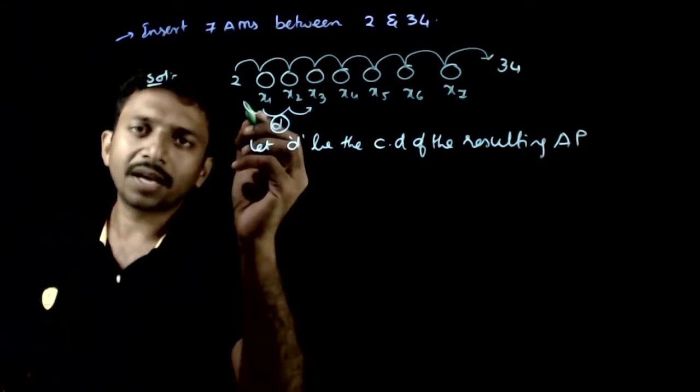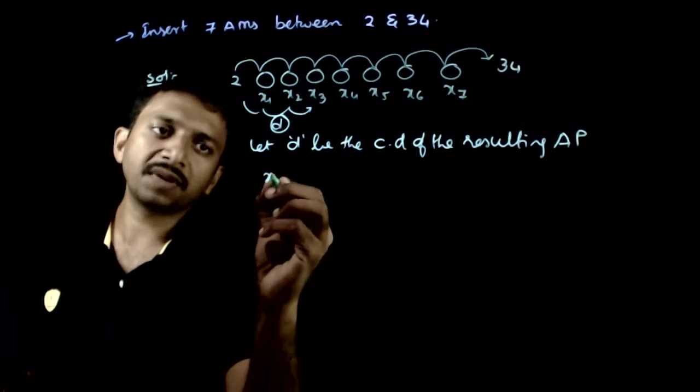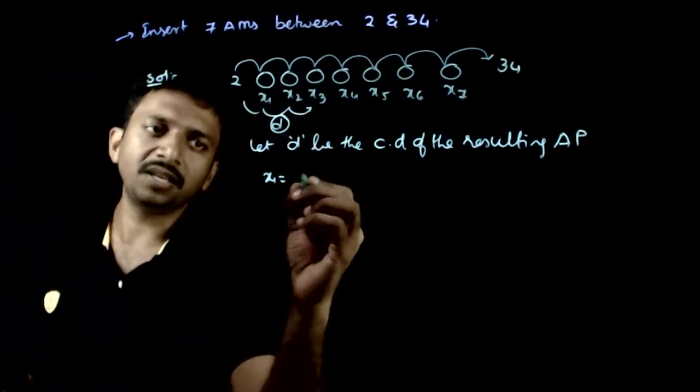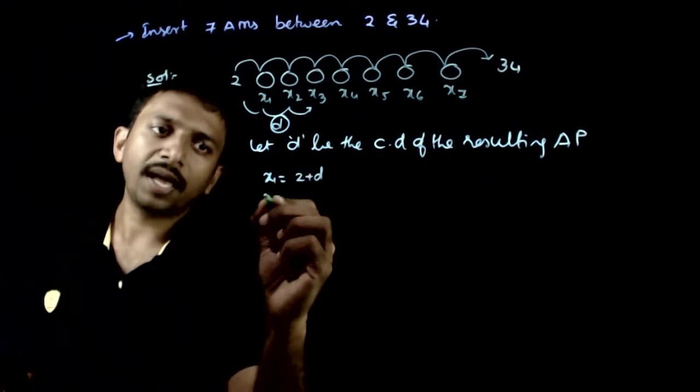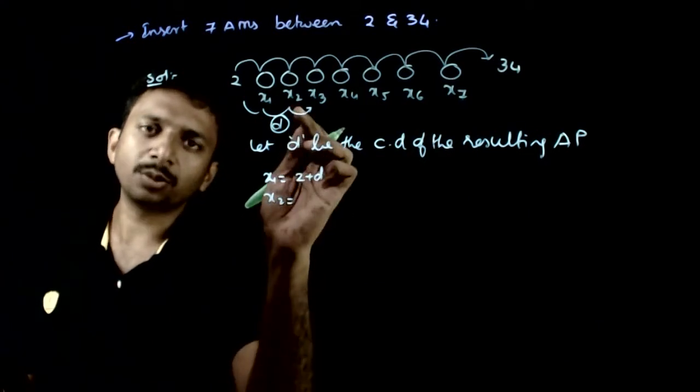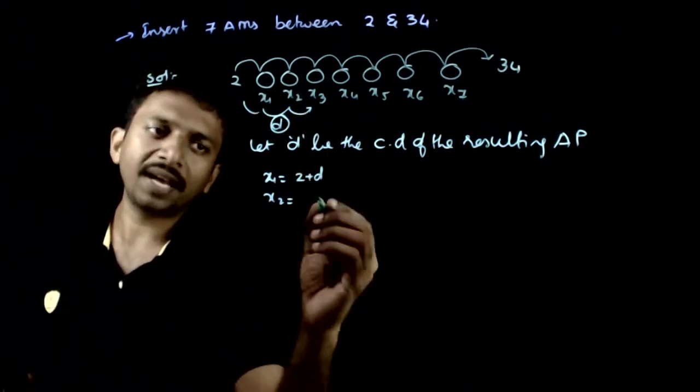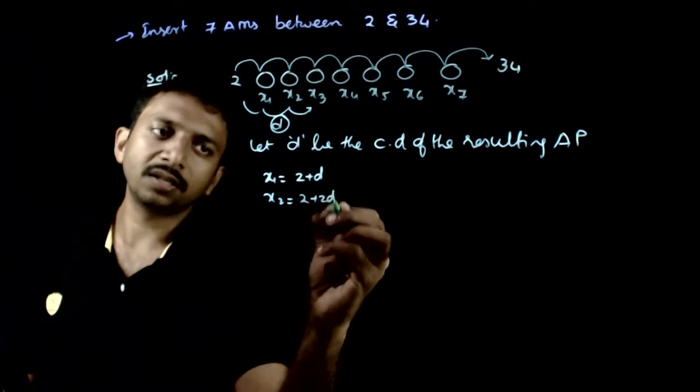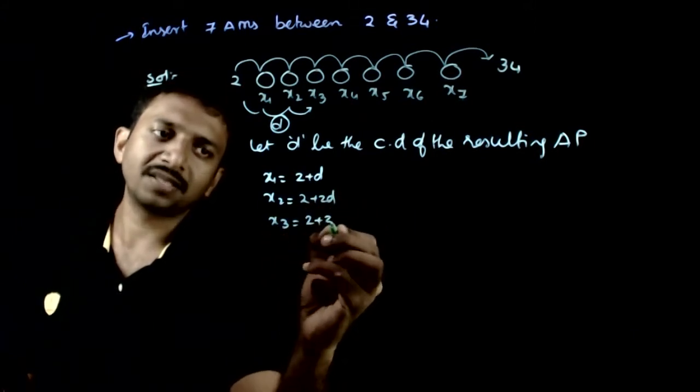So if D is the common difference, then x1 has to be 2 plus D, x2 has to be 2 plus 2D, and x3 is equal to 2 plus 3D.